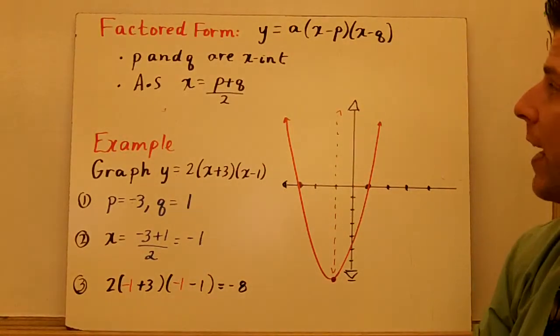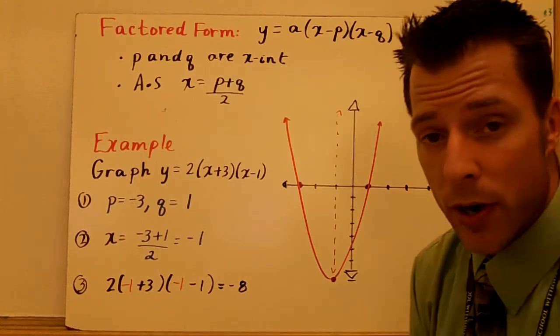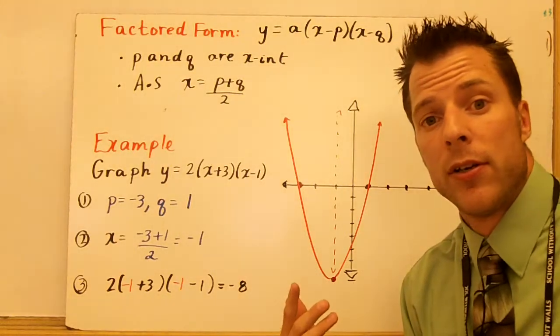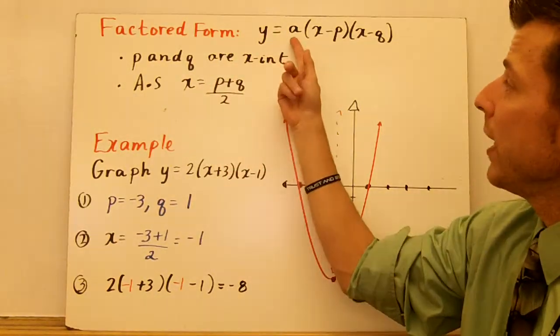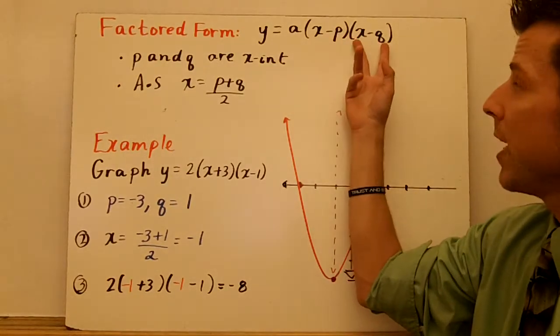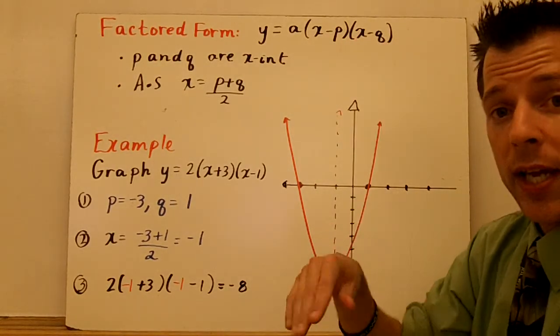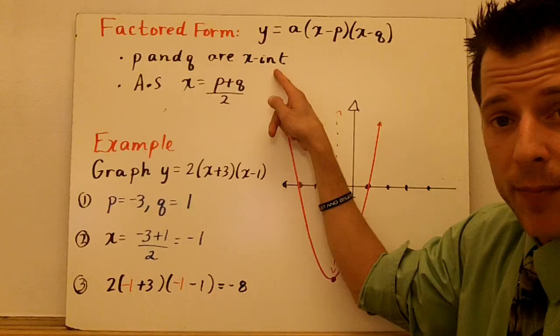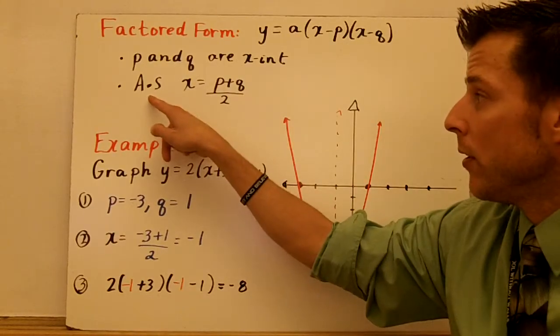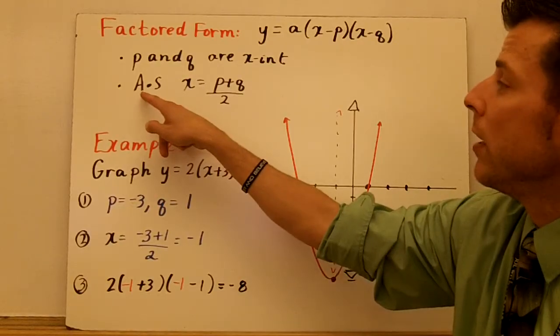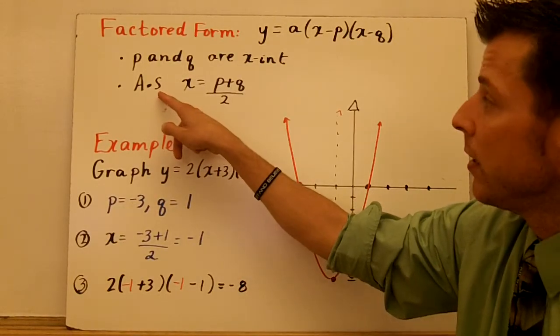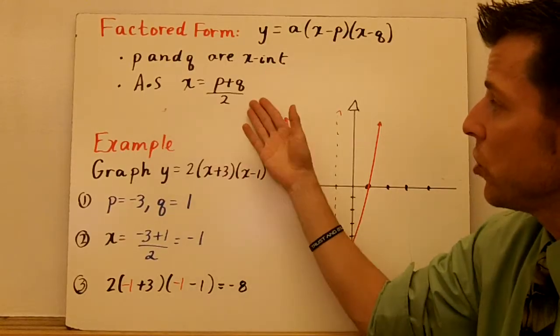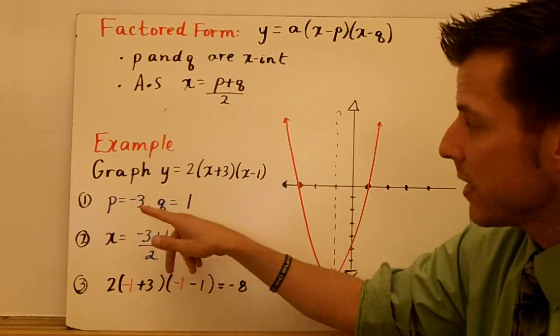So now, in factored form, this is our other part of this that we're going to sneak an example in here. So y equals a times the quantity x minus p times x minus q. It's very important to realize that p and q are the x-intercepts. The axis of symmetry is going to be p plus q over 2. So these are the two big things we have. Let's look at an example.